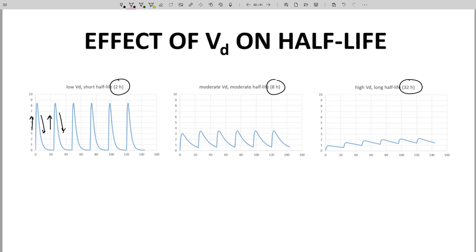As we go to the middle graph, VD is higher and half-life is longer. The CP range is now much smaller. This is because the drug is not so restricted to just the plasma.